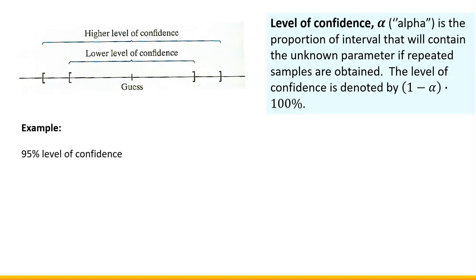well then with 95% level of confidence I will know that 95% of those intervals will indeed contain the unknown population proportion.